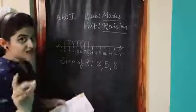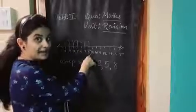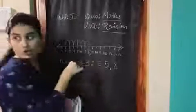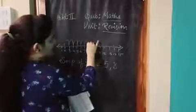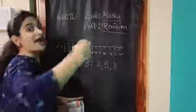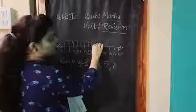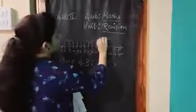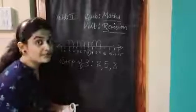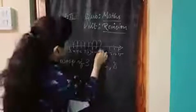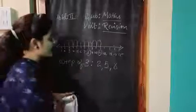Okay, so have you understood? Yes. Now number 8 is our number. 8 to 9, 1 step; 9 to 10, 2nd step; 10 to 11, 3rd step. So how much number is our number? 11 number is our number.